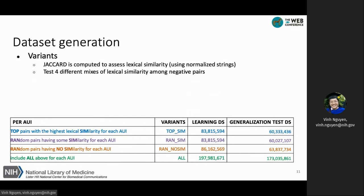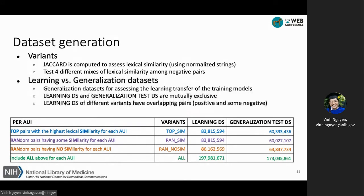For the All variant, we include all of the negative pairs from the previous variants. For the datasets obtained from the positive and negative sets, we divided them into learning and generalization sets. The purpose of the generalization dataset is for assessing the learning transferability of the trained model.